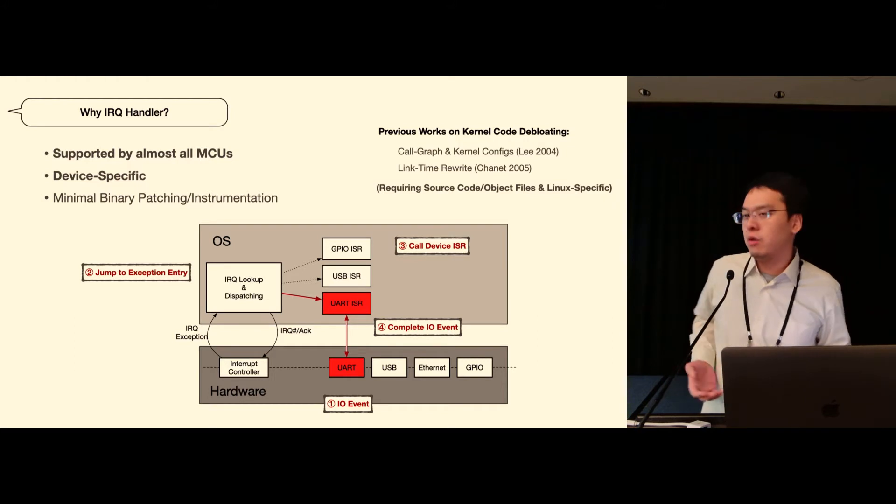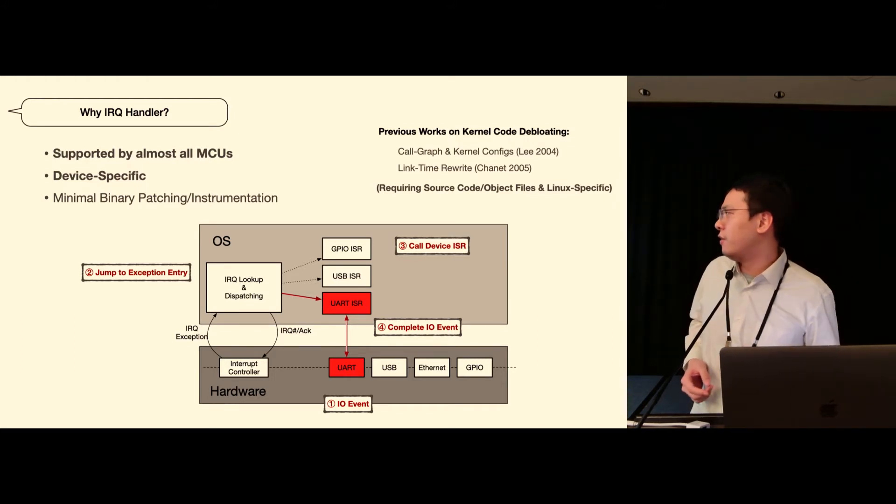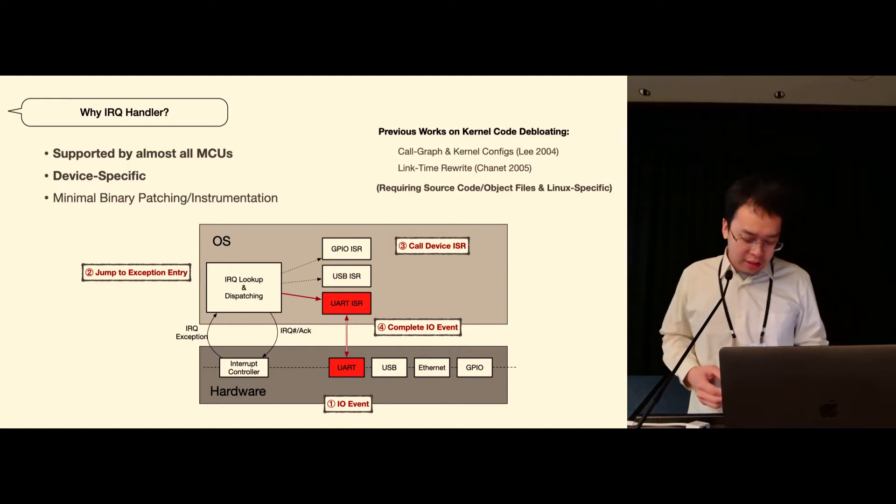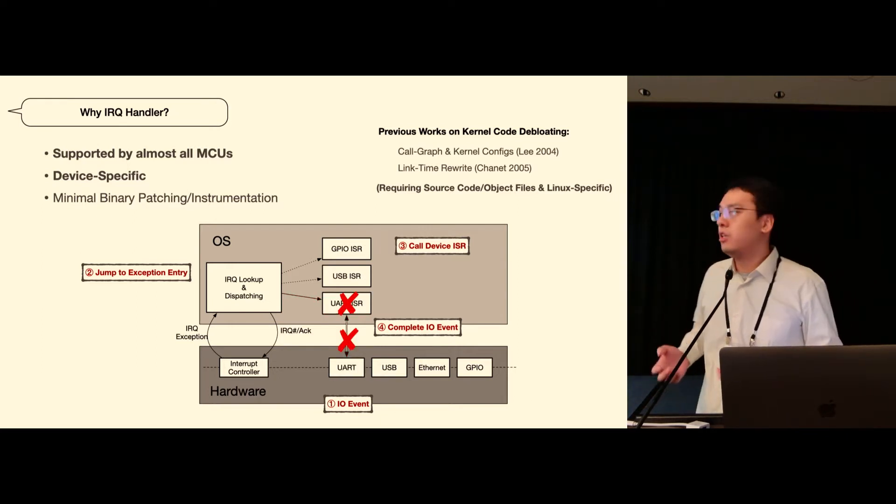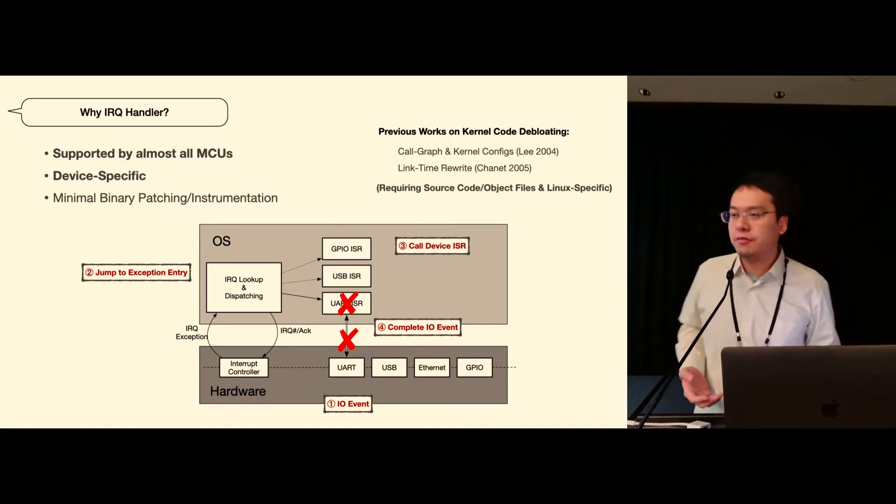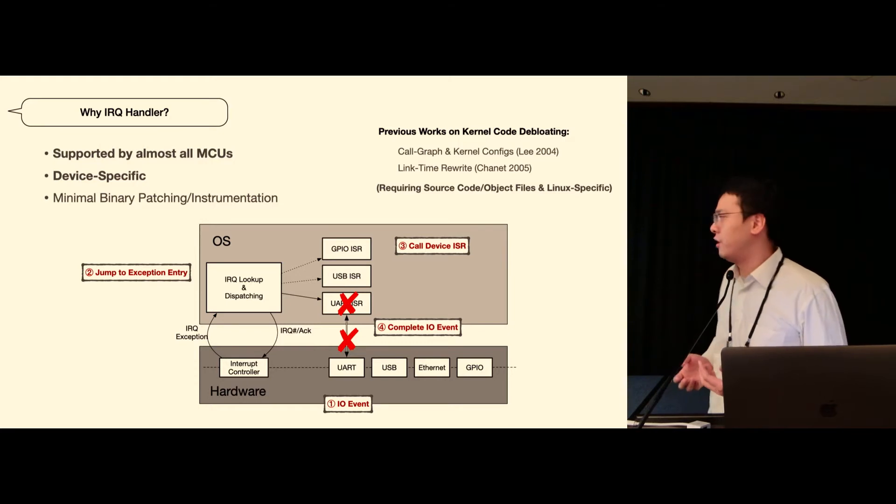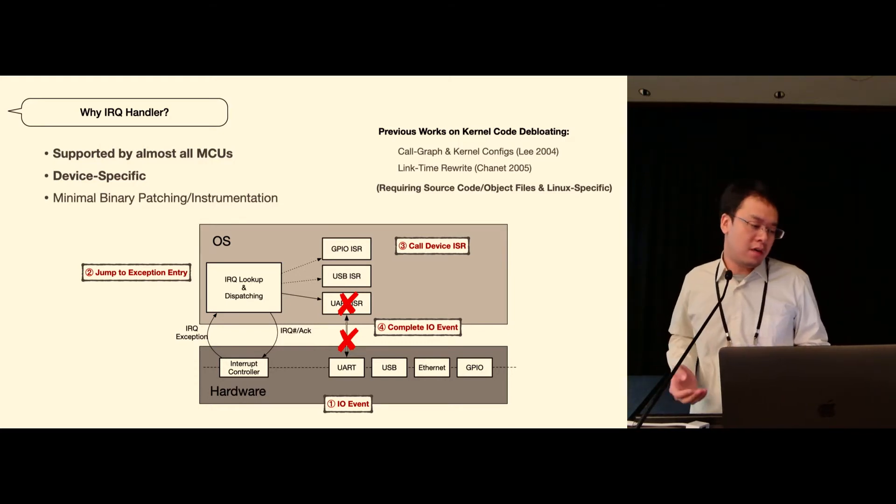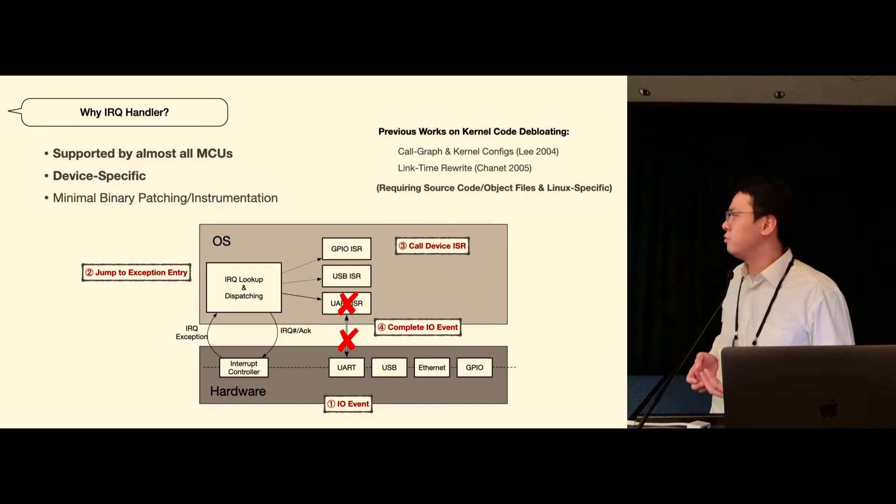So here comes our second reason that we chose interrupt handlers: they are all device specific, which means as long as we can disable an interrupt handler we can prevent all the IO events coming through that hardware device and therefore we can disable its functionality from the perspective of a user.